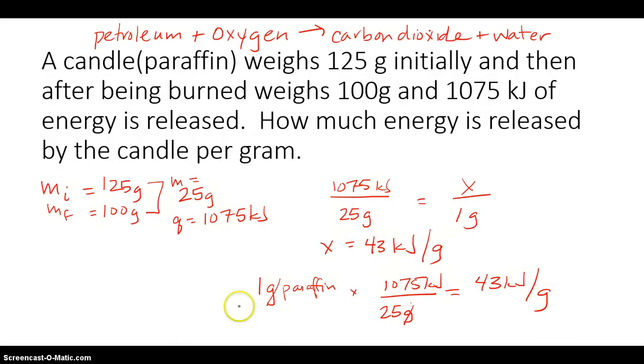So either way is possible of how you can solve that problem. You can either cross-multiply. Eventually, we want to get you to the point where you are doing dimensional analysis. So this is what we call the heat of combustion. For paraffin, the heat of combustion is 43 kilojoules for every gram that is burned.